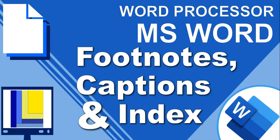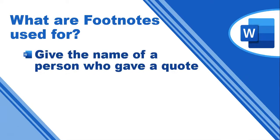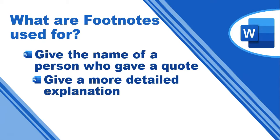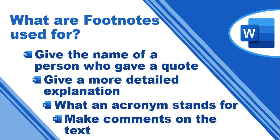Let's do some more word processing with Microsoft Word and look at three key things with referencing: footnotes, captions, and index. Let's start with footnotes. Footnotes are used to give the name of a person who gave a particular quote, to give a more detailed explanation, explain an acronym or initialization, or to make comments on particular text in the document.